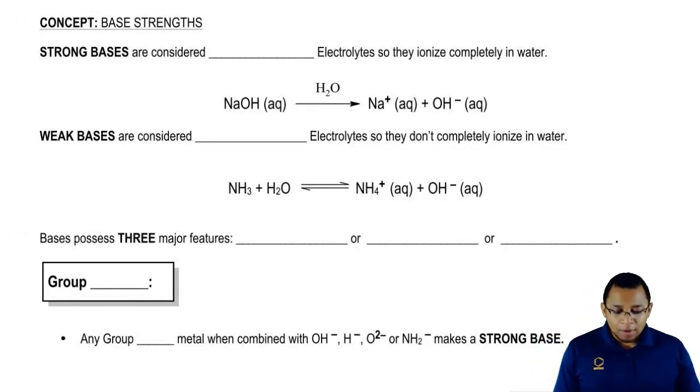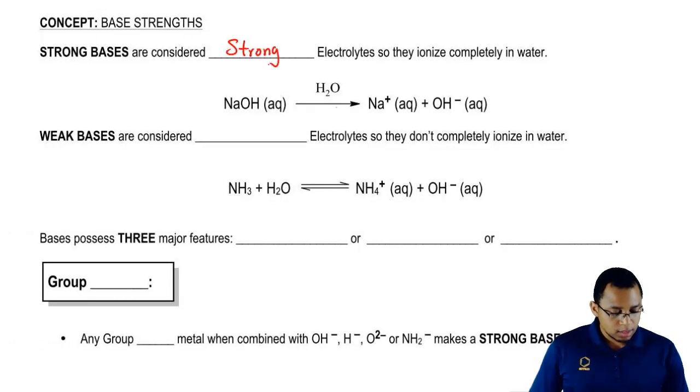Let's take a look at bases. We're going to say strong bases are considered to be strong electrolytes and what does strong electrolytes mean? It means that it completely breaks up or dissociates when dissolved in water. Here you're going to notice that we have a solid arrow going forward. This means reaction goes to completion.